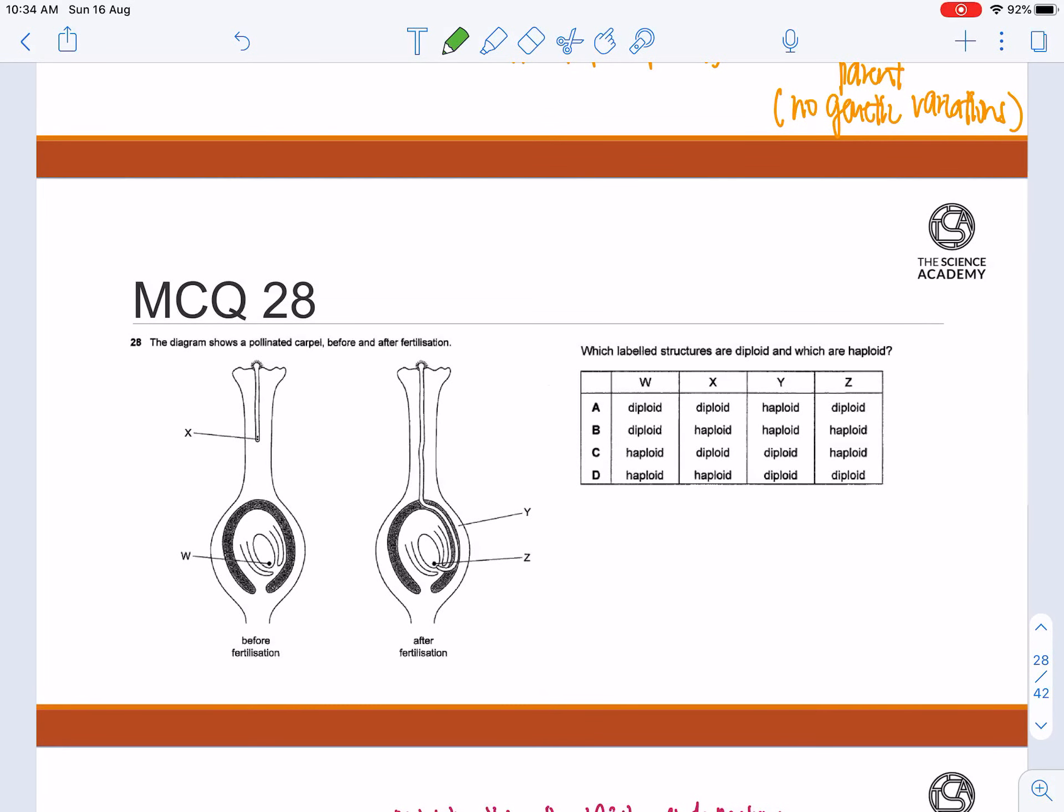Now let's move on to MCQ question 28. The diagram shows a pollinated couple before and after fertilization, which labelled structures are diploid and which are haploid.